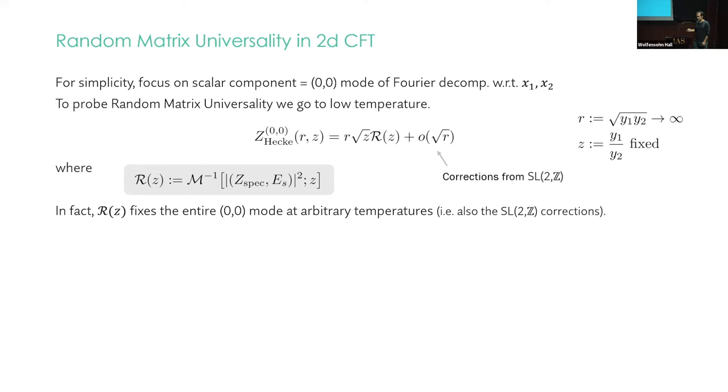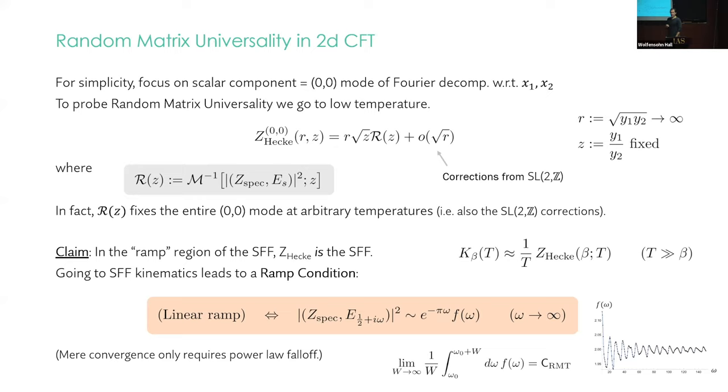Okay, so here's the main point. We constructed this by definition as a diagonal approximation to the product. So in the ramp region of the spectral form factor, the Z_Hecke, well it is the spectral form factor. And so we can ask, what does it take for this to exhibit a ramp? This being fixed in terms of this microscopic overlap of the theory, it ends up being a condition on that overlap. You go through a calculation, the output is this.